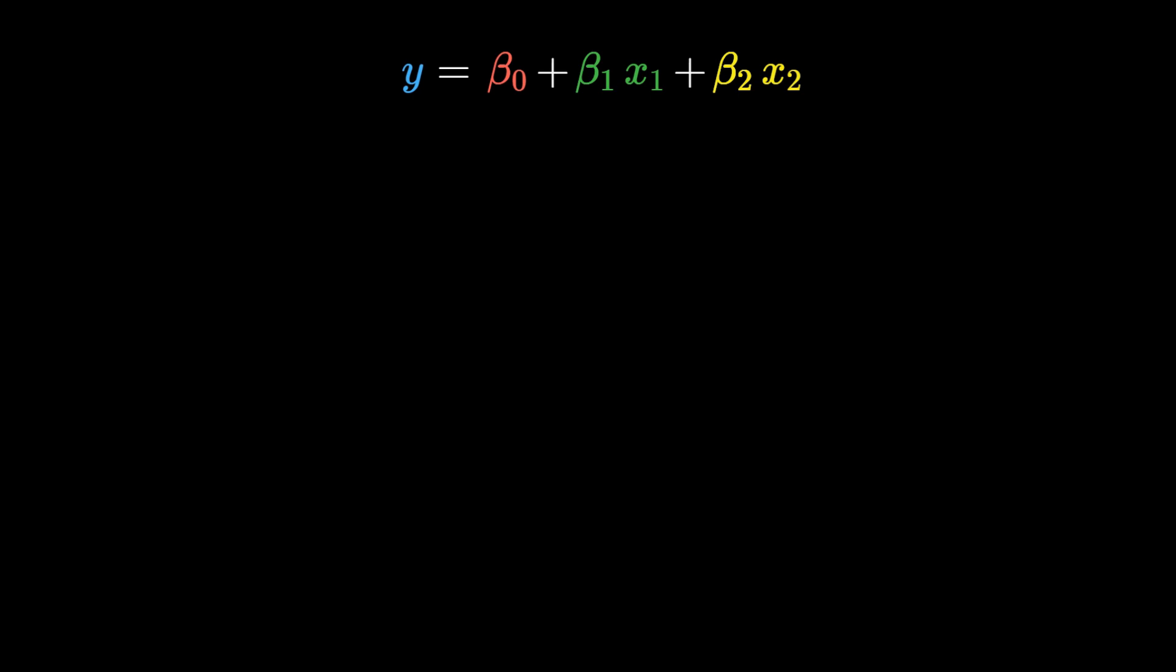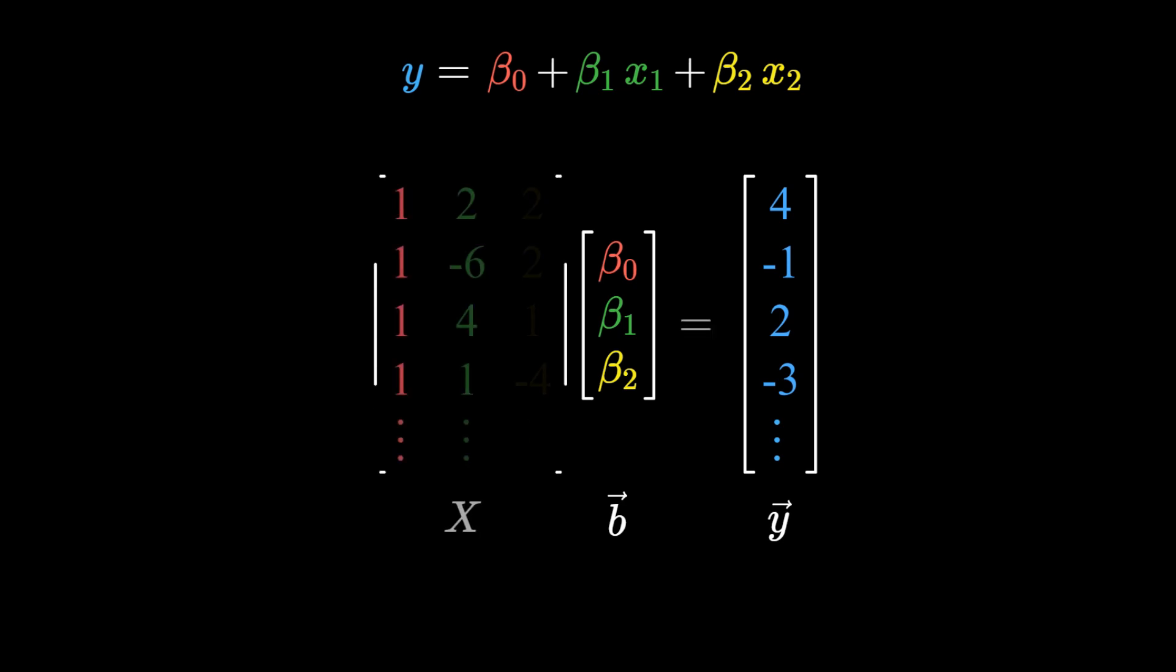When we have two input variables x1 and x2, our vector b will store the three unknown coefficients in our linear equation. The output y is still a vector. Our data matrix x has three columns. Each column of x represents all of the data for one input variable, except for the first column, which consists of all ones as multipliers for the constant offset beta0.